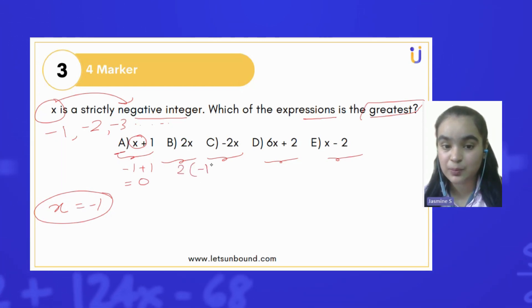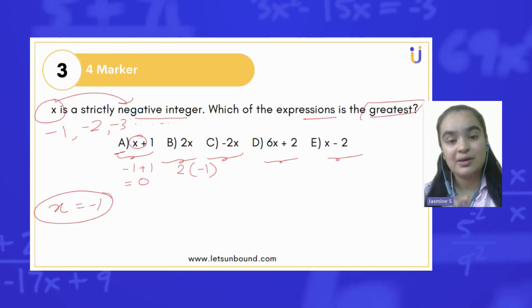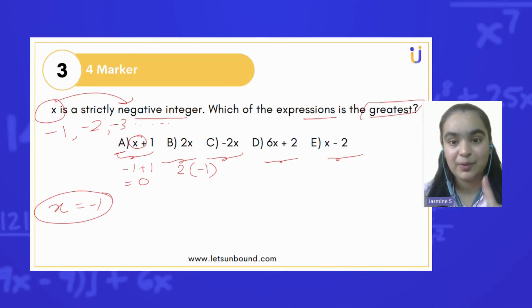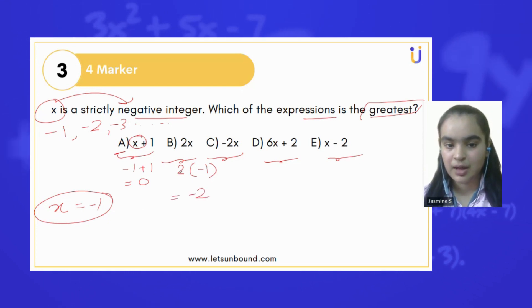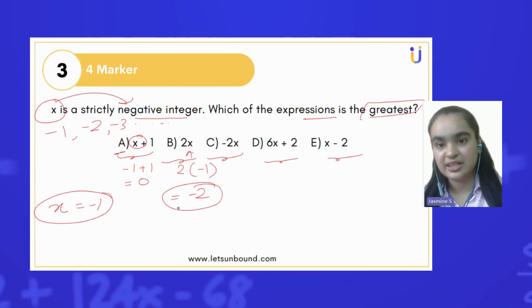In the second question, it will be 2 times -1. We know that when a positive and a negative number are in multiplication, the answer will always be negative. So whatever value we are putting here, the answer is going to be negative always.